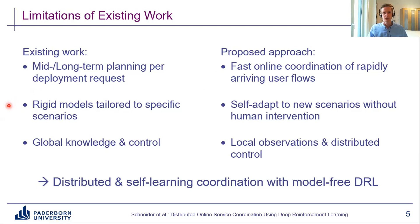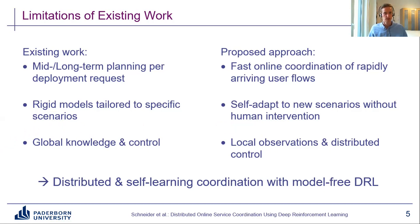Second, existing approaches often build on conventional methods like heuristic algorithms or mixed integer linear programs, designed by experts and tailored to specific scenarios with quite rigid models and assumptions. They work well in these scenarios but easily break if assumptions no longer hold, for example because the scenario evolves over time. It would be a lot nicer to have an approach that self-learns and self-adapts to any given scenario without human intervention. Third, existing approaches — both conventional and self-learning — often assume global, up-to-date, sometimes even a priori knowledge of the entire network, and also centralized global control, which is problematic for practical large-scale networks. Instead, we focus on local observations and distributed control that is a lot faster and more scalable.